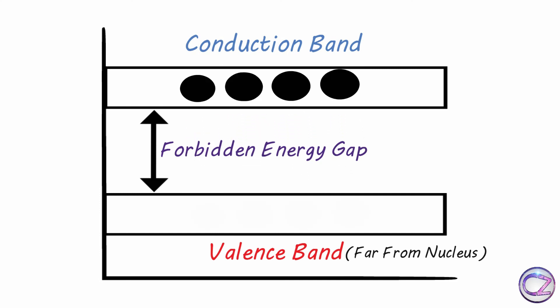Now forbidden energy gap. It's located between valence and conduction bands. Actually this gap distance means how much energy is needed to get free electrons from the valence band.